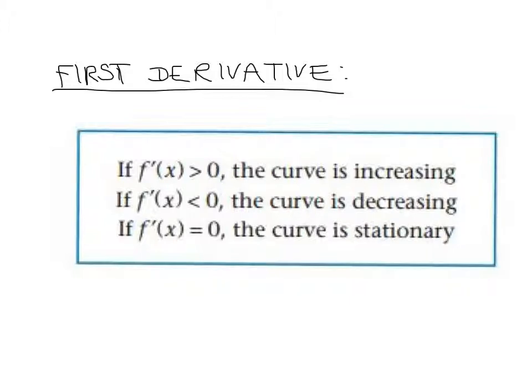But most importantly for us, if it's equal to zero, then you've got a stationary point. That tangent is parallel to the x-axis.